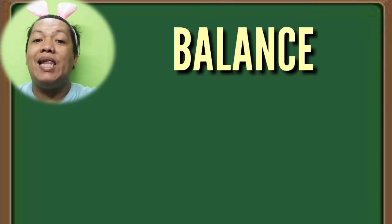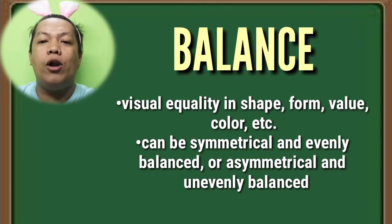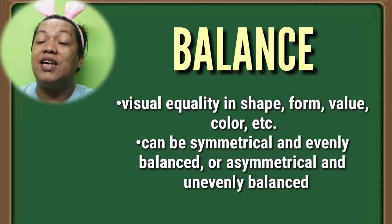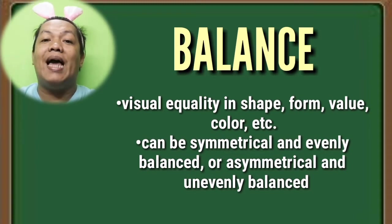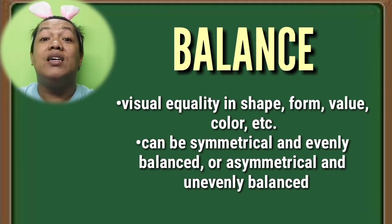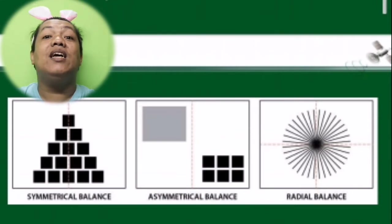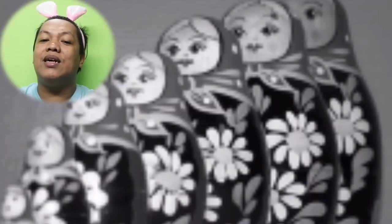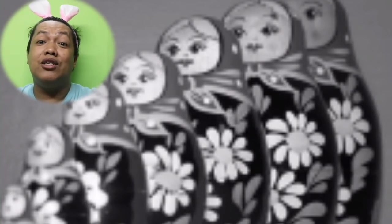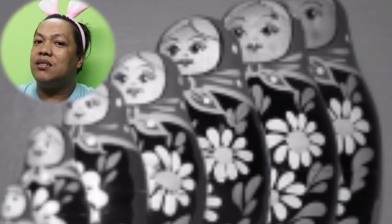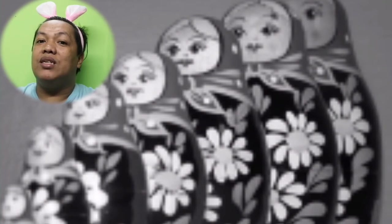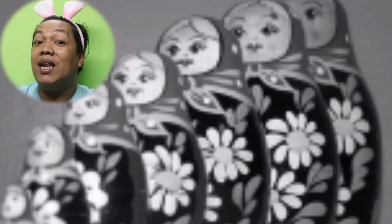The third visual design element is balance — visual equality in shape, form, value, and color. Balance can be symmetrical and evenly balanced, or asymmetrical and unevenly balanced. As shown on your screens, we have symmetrical balance, asymmetrical balance, and radial balance. Take a look at the example of the dolls, from the smallest to the tallest — observe what kind of balance is being shown.